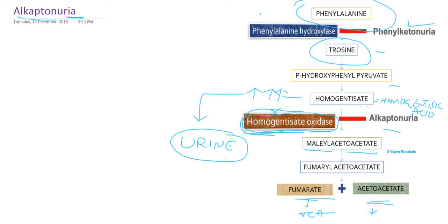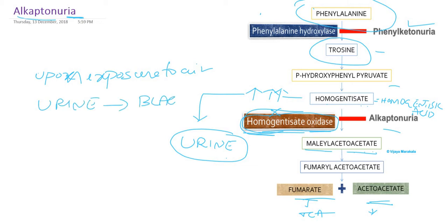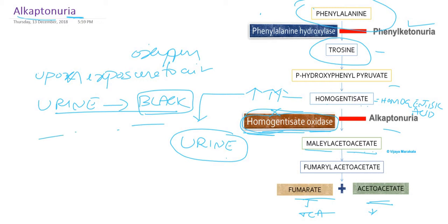The hallmark of this disorder is that if you collect the urine upon exposure to air, the urine turns black color. Usually a mother will notice that if they put a diaper on the child, the next morning the whole diaper may turn black. This is because homogentisic acid when it comes in contact with atmospheric oxygen, it is oxidized and turns the urine black. This is the characteristic feature of alkaptonuria.